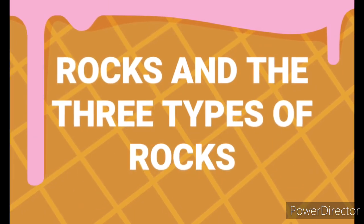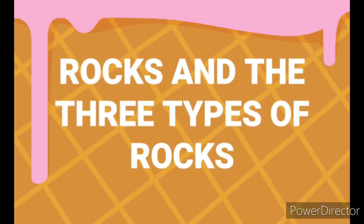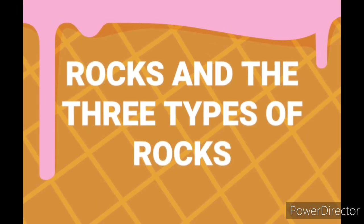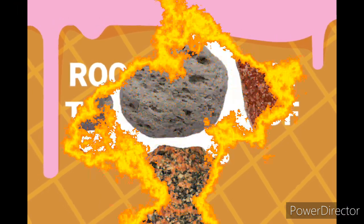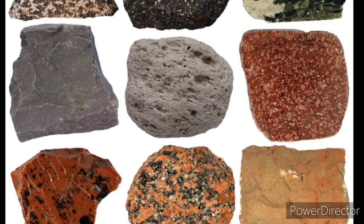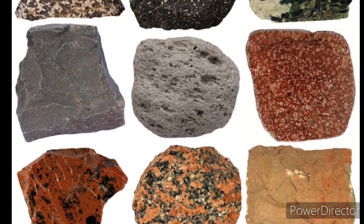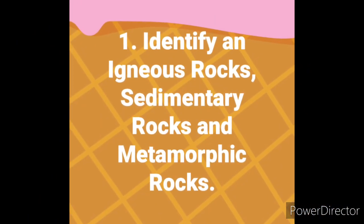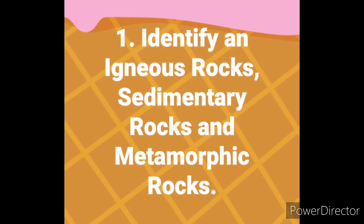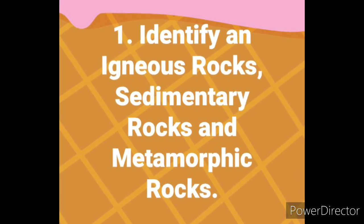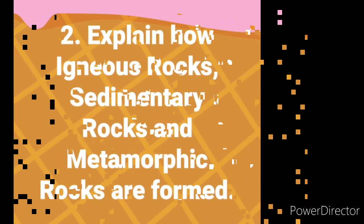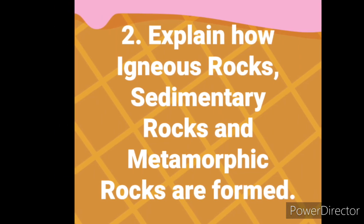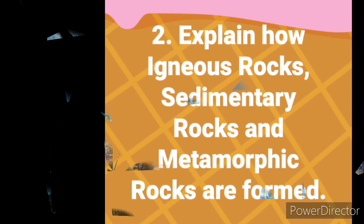Today, our lesson is all about rocks and the three types of rocks. It is found in Unit 8, pages 104 and 107. At the end of this lesson, you will be able to: Number 1, identify igneous rocks, sedimentary rocks, and metamorphic rocks. Number 2, explain how igneous rocks, sedimentary rocks, and metamorphic rocks are formed.